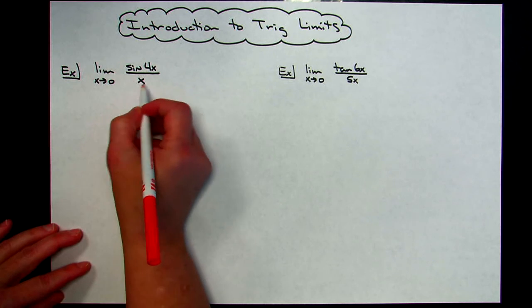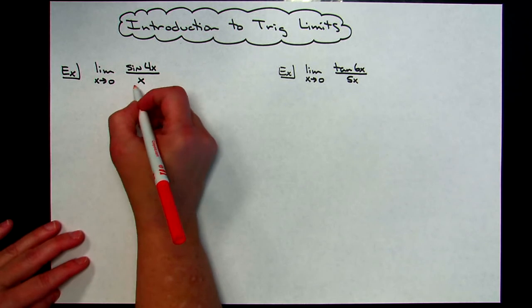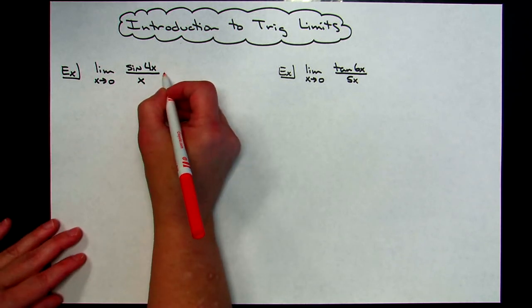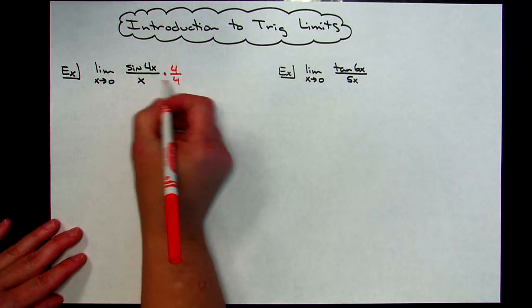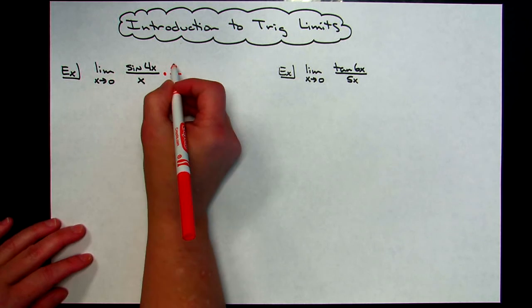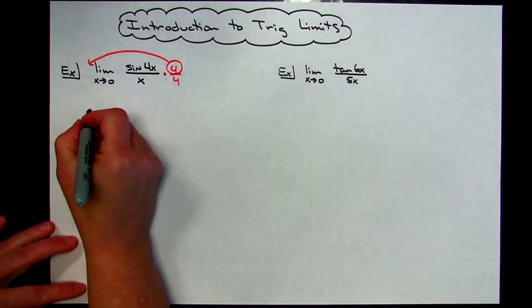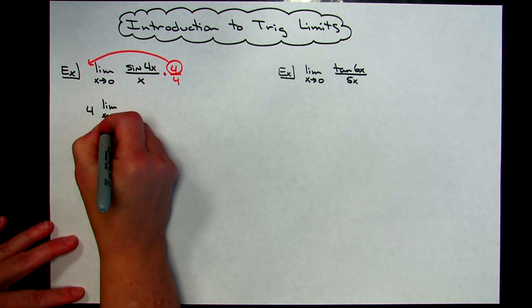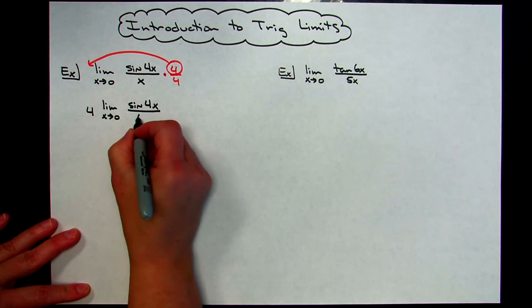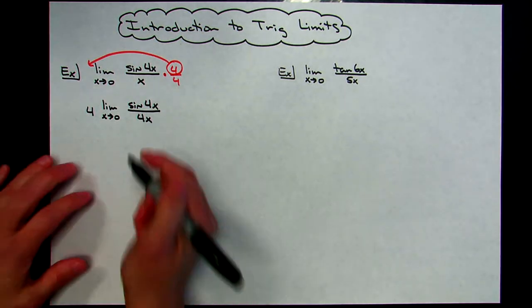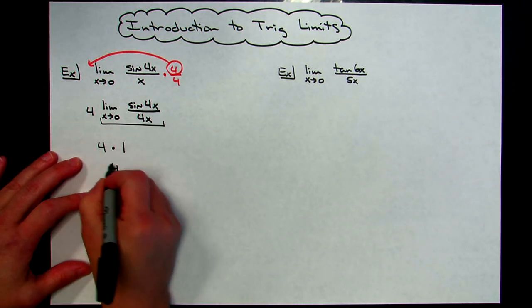Right here I have a 4x, and I need this denominator to match that so that I can say it's going to equal 1. So I need a 4 in the bottom. I can multiply by a form of 1 — I'll choose 4 over 4 — because that will give me a 4x in the bottom. This 4 is left over and I'll bring it out in front of the limit. So I'll have 4 times the limit as x approaches 0 of sine 4x over 4x. Now I can use the special trig limit: this goes to 1, so 4 times 1 gives an overall answer of 4.